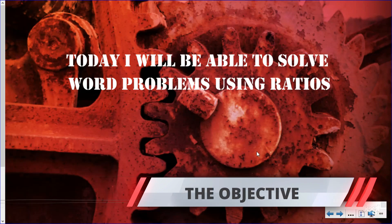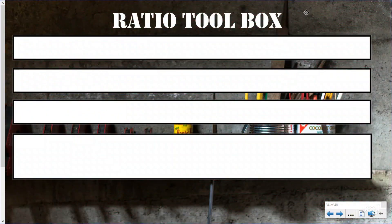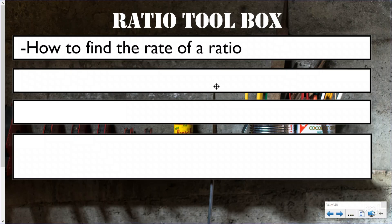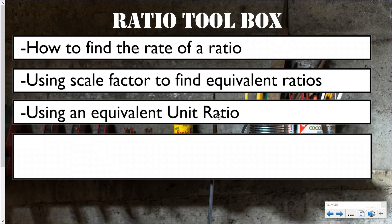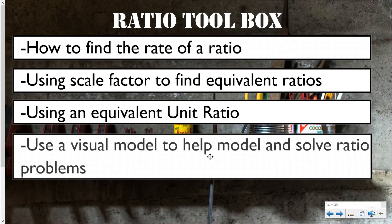Today I will be able to solve word problems using ratios. We're going to look at four different problems where we can use tools from our ratio toolbox. Just like every car mechanic has a toolbox filled with tools for any job, you have a ratio toolbox. Our tools include: finding the rate of a ratio, finding the multiplicative relationship, using scale factors to find equivalent ratios, finding unit ratios, and using tape diagrams to visually model and solve ratio problems.